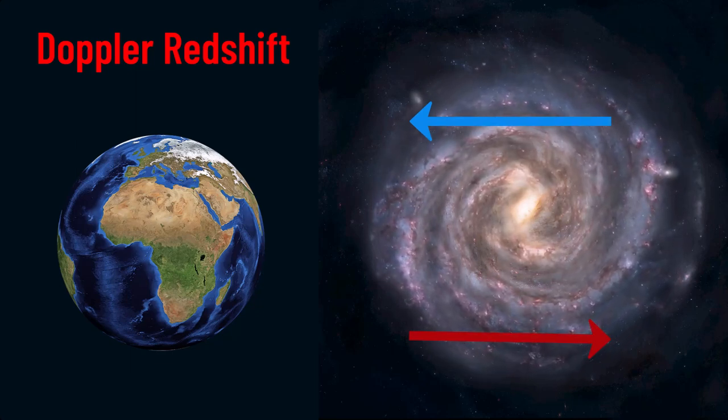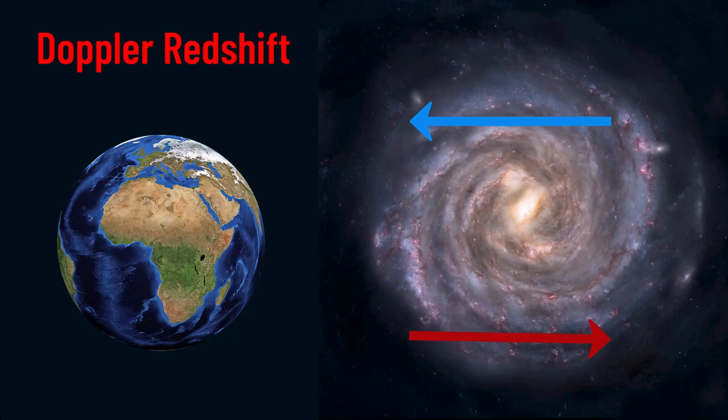This is exactly what's happening with the peculiar velocities of stars in spiral galaxies, and hence gives rise to a Doppler redshift.